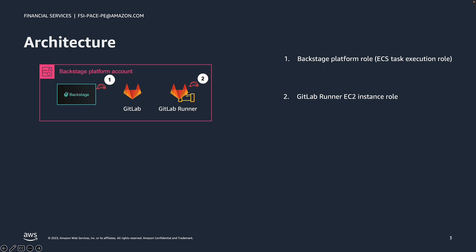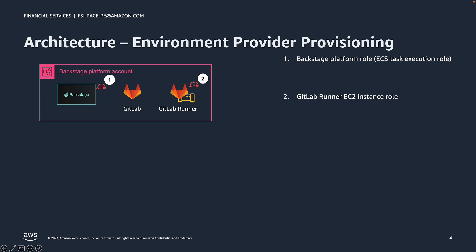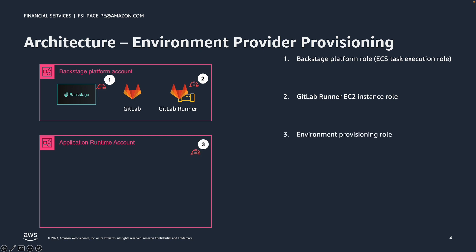A couple of key roles in the platform account are the task execution role associated with Backstage, and the EC2 instance role where GitLab runners execute. A primary use case of OPA on AWS for platform engineers is to provision new environments where business applications can run. In each target account, we'll need a role with permissions to create required AWS resources for an environment provider. For example, if we wanted to provision an Elastic Container Service environment to run containerized applications, then this role will need to be allowed to create VPCs, security groups, ECS clusters, ECR repositories, and other resources required to run containerized apps in an ECS cluster. We'll call this role an environment provisioning role.